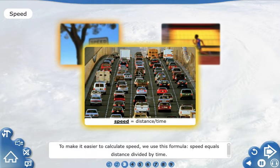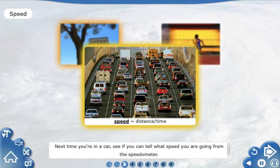To make it easier to calculate speed, we use this formula. Speed equals distance divided by time. Next time you're in a car, see if you can tell what speed you are going from the speedometer.